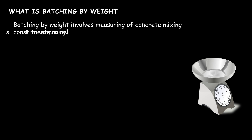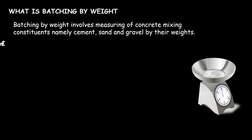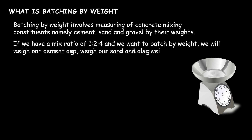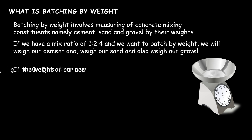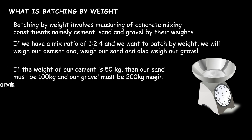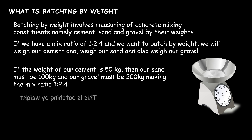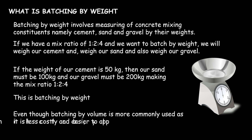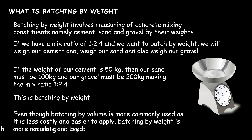Batching by weight involves measuring of concrete mixing constituents — namely cement, sand, and gravel — by their weights. If we have a mix ratio of 1:2:4 and we want to batch by weight, we will weigh our cement, weigh our sand, and also weigh our gravel. If the weight of our cement is 50 kg, then our sand must be 100 kg and our gravel must be 200 kg, making the mix ratio 1:2:4.